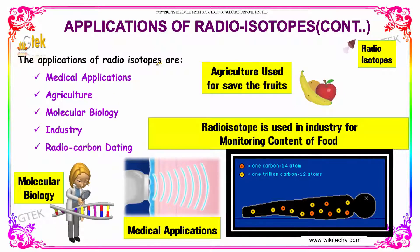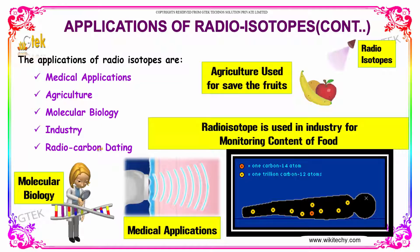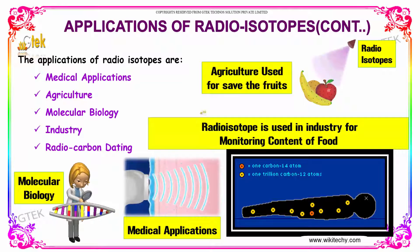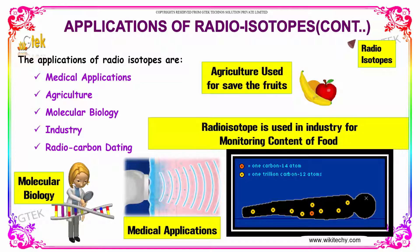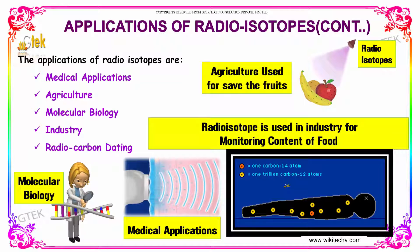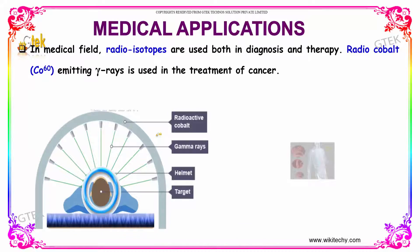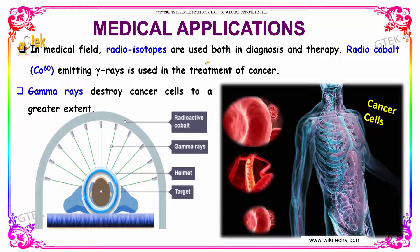The applications of radioisotopes include medical applications, agriculture, molecular biology, industries, and radiocarbon dating. In agriculture, radioisotopes are used to preserve fruits and monitor the content of food. We will discuss radiocarbon dating in future sessions. In the medical field, radioisotopes are used both in diagnosis and therapy.